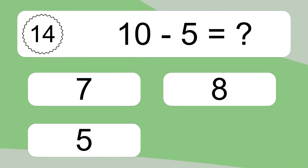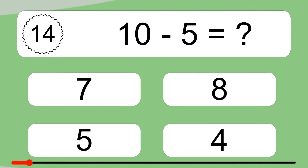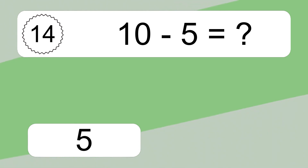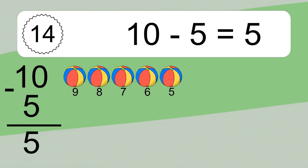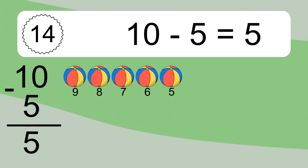10 minus 5 equals what? 10 minus 5 equals 5. Let's count it: 9, 8, 7, 6, 5.